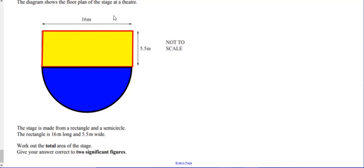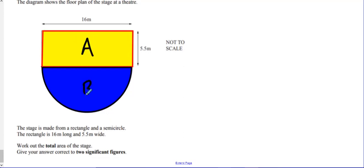This is a compound shape. To work out the total area, divide the shape: one part is a rectangle, label it A; the other part is a semicircle, label it B.